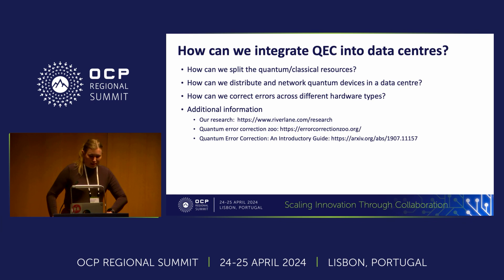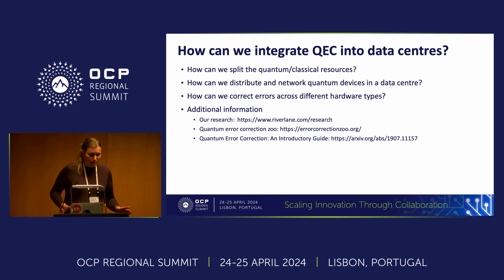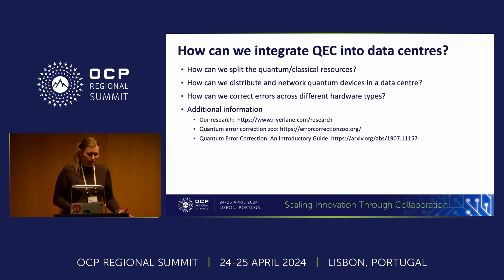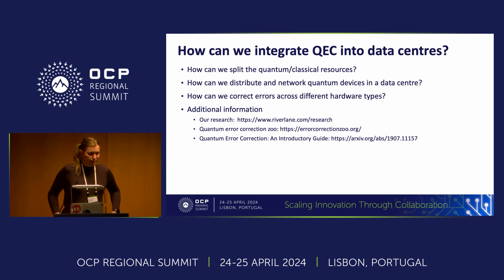To finish with a call to action: in the long run, we want to integrate quantum error correction into data centers. There are lots of open questions. Fault-tolerant quantum computing requires a lot of both quantum and classical resources — how can we best split those within a data center environment? We also want to look at distributing and networking quantum devices rather than fitting all qubits into a single processor. And we're not targeting a single hardware platform — we have people working on cat qubits, superconducting, and trapped ions. How can we correct errors across all of these different hardware types?